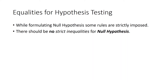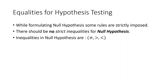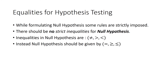There should be no strict inequalities in the null hypothesis. The inequalities in the null hypothesis are: not equal to, less than, and greater than. These three are strictly not allowed in the null hypothesis — if you allow them, your problem becomes a mess. Instead, it should be given by equal to, greater than or equal to, or less than or equal to.